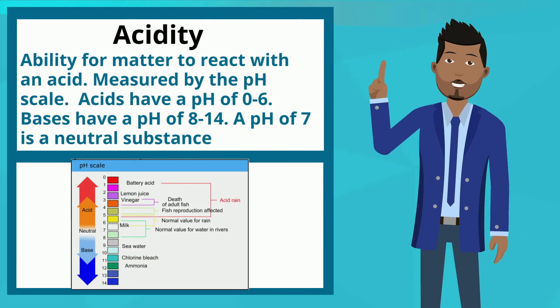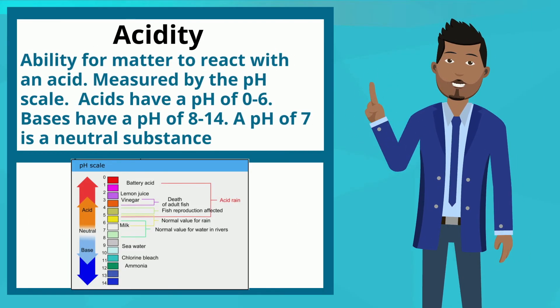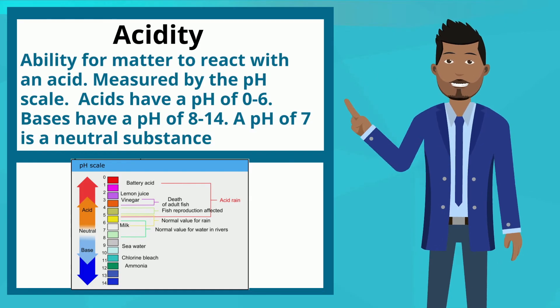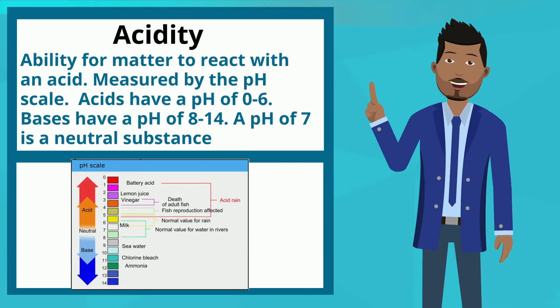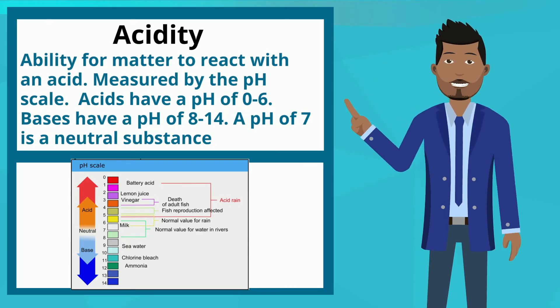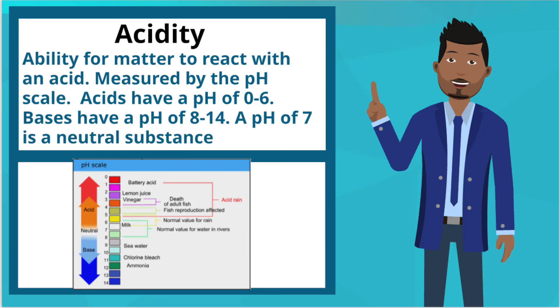Acidity is the ability for matter to react with an acid. Measured by the pH scale, acids have a pH of 0 through 6. Bases have a pH of 8 through 14. A pH of 7 is a neutral substance.